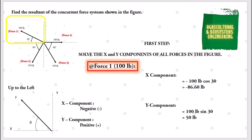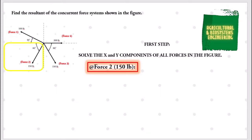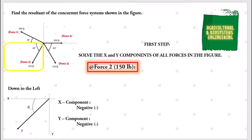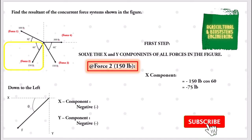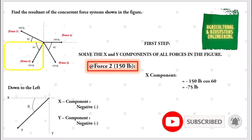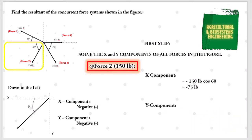Next, we solve Force 2, the 150 pounds. Its direction is going down to the left, so both the x and y components are negative. The x component is negative 150 multiplied by cosine 60, giving negative 75 pounds. For the y component, we have negative 150 pounds sine 60, giving negative 129.90 pounds.